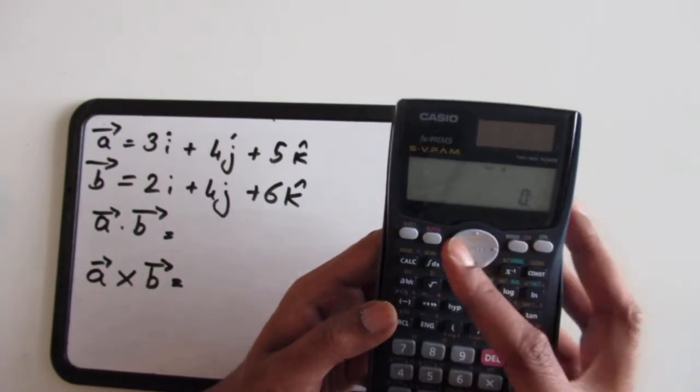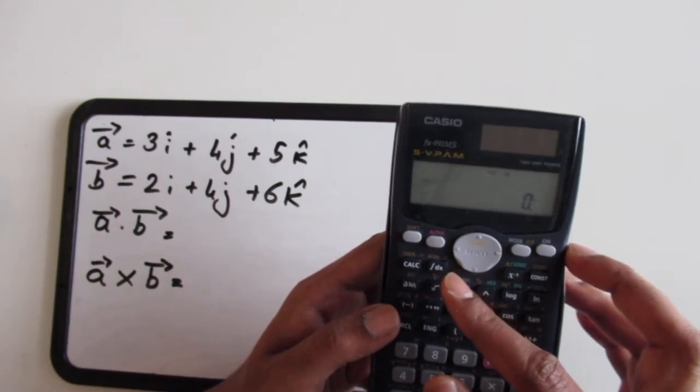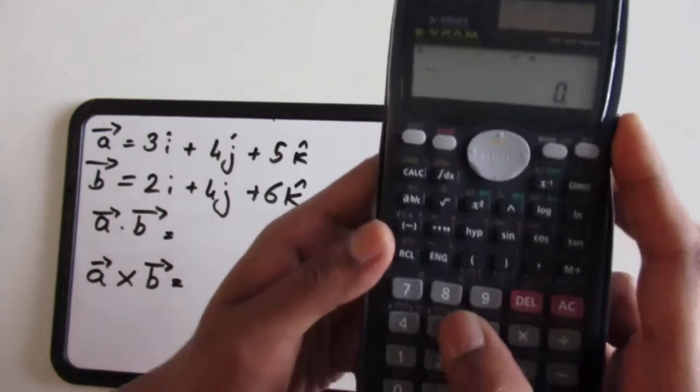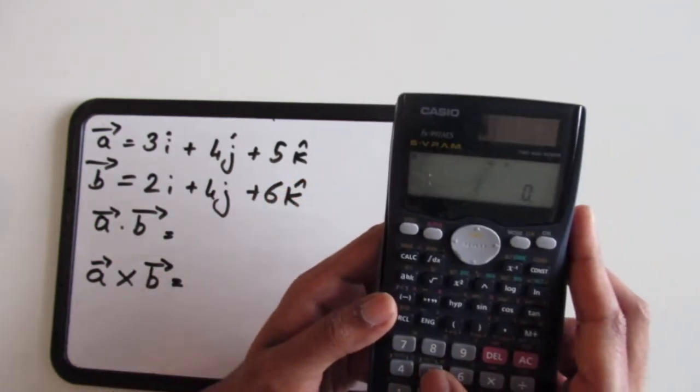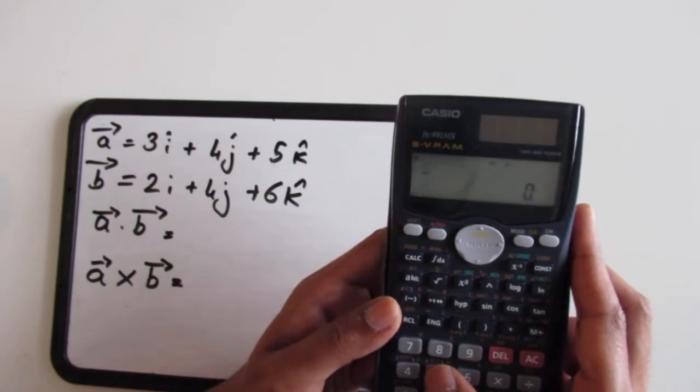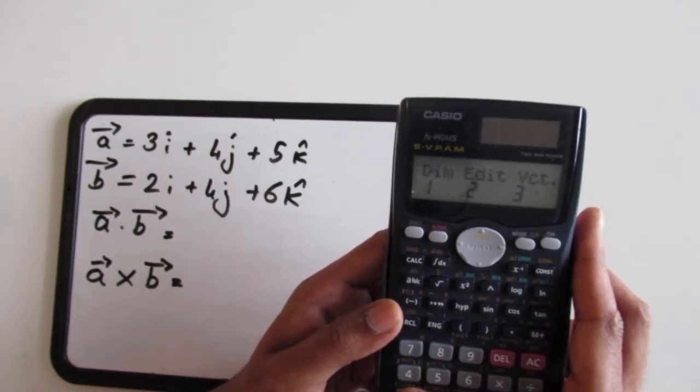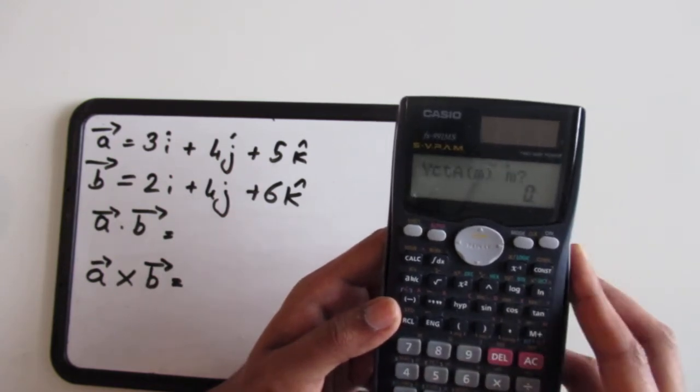Now I'm going to input the values of vector A which is 3i plus 4j plus 5k. I'm going to press shift and press button 5 which has a little vector if you see up close on top of it. Now I'm going to enter the dimension of vector A which is 3.